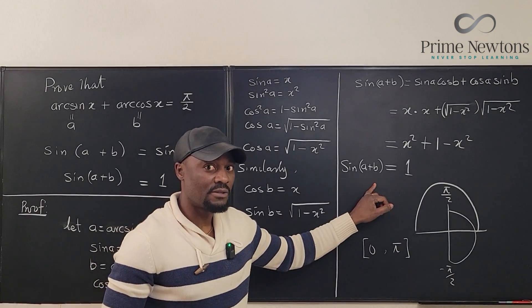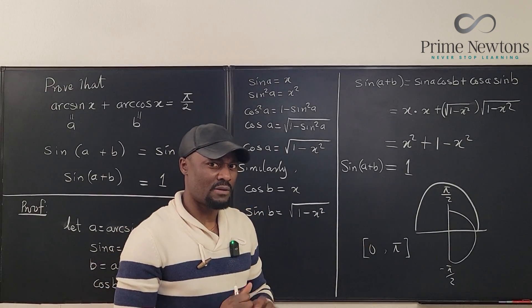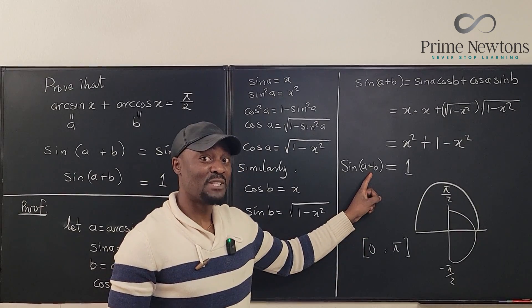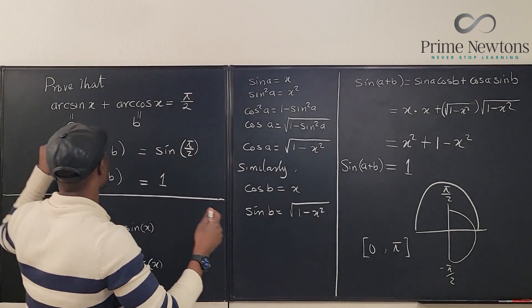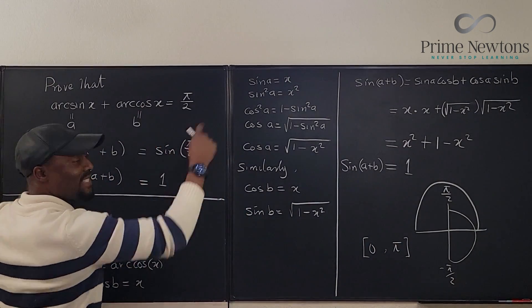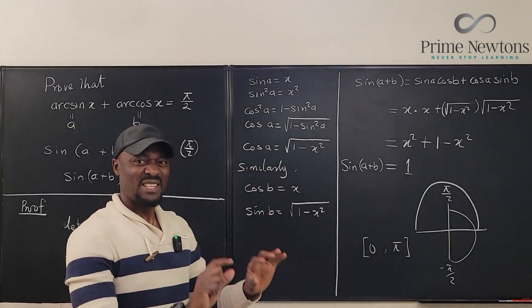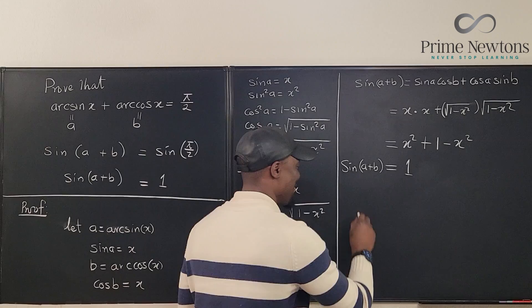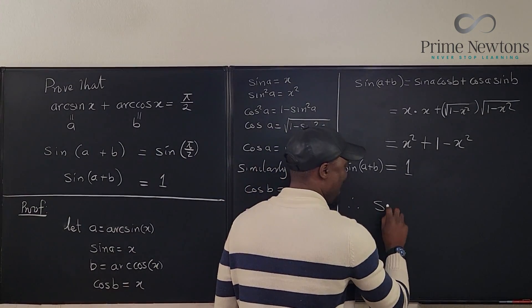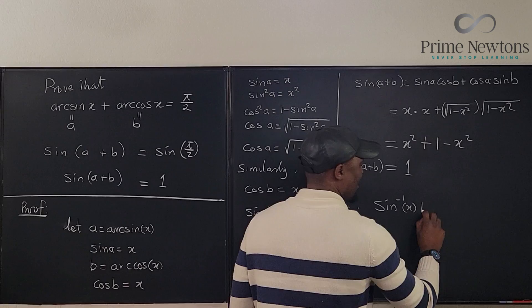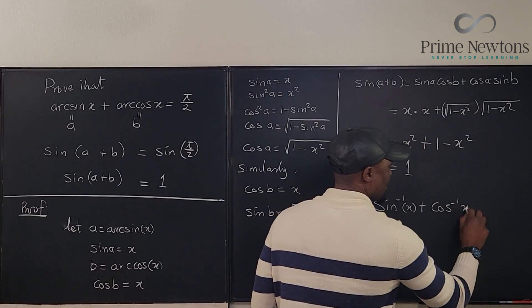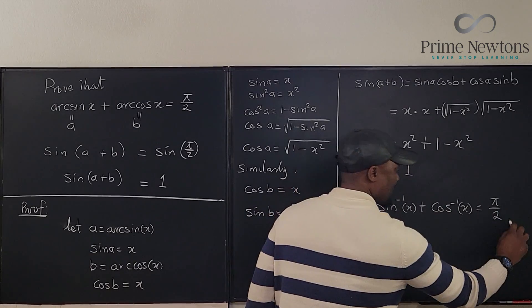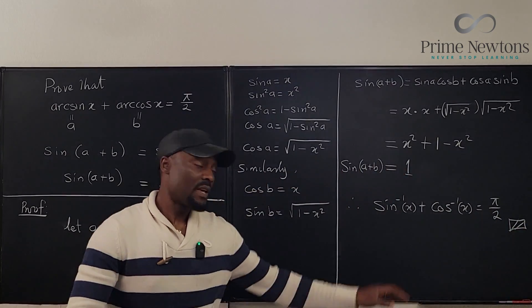Sine a plus b is equal to 1. If the sine of an angle is equal to 1, what is that angle? A plus b must be pi over 2. But what is a? What is b? So this statement is actually correct just by simple manipulation. Let me just write the original claim. We can say, therefore, arc sine x plus arc cosine x equals pi over 2.